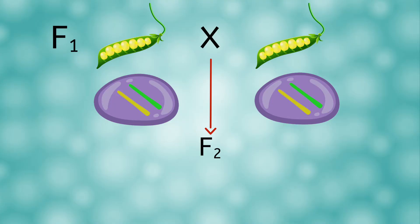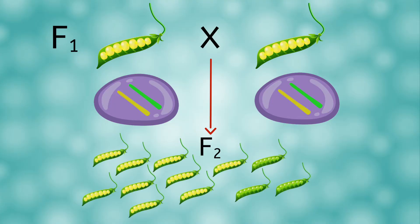Well, not surprisingly, most of the plants had yellow seeds. But only most, not all. The green trait, which had completely disappeared in the F1 generation, was back. Approximately one-fourth of all plants in this generation had green seeds.